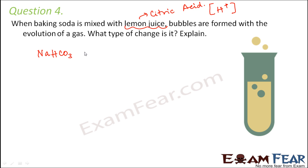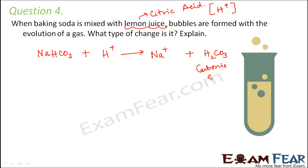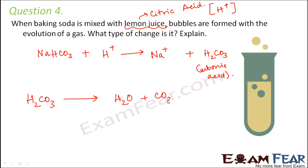All acids contain H+ ions. When sodium bicarbonate reacts with the H+ ions of citric acid, it dissociates into sodium ions and H2CO3 (carbonic acid).